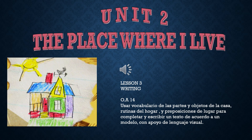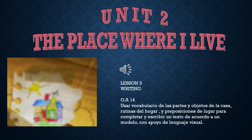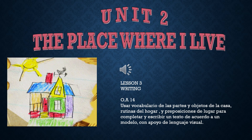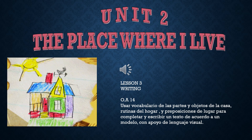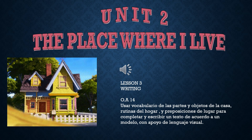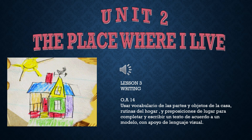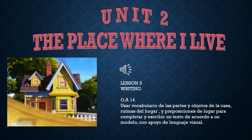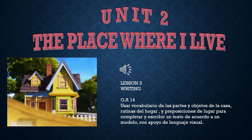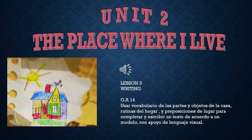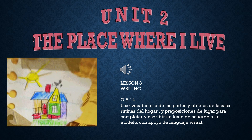The ability is writing. The objective is number 14. El objetivo número 14 dice usar vocabulario de las partes y objetos de la casa, rutinas del hogar y preposiciones del lugar para completar y escribir un texto de acuerdo a un modelo y con apoyo de lenguaje visual.